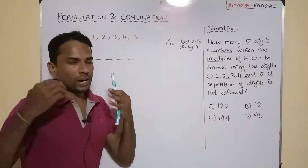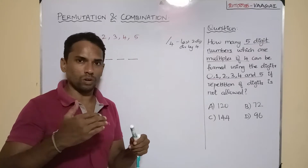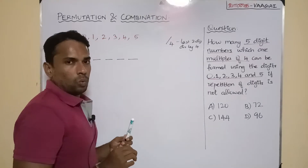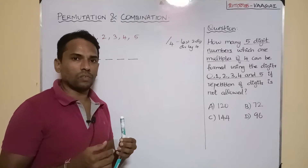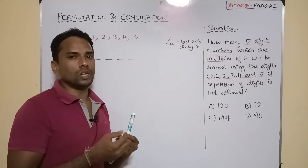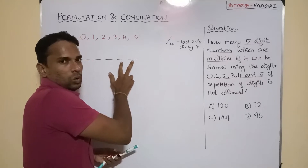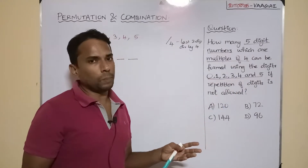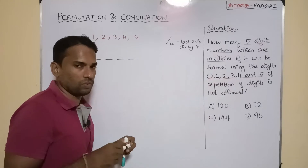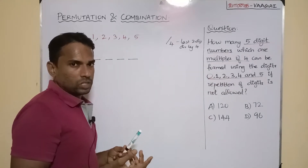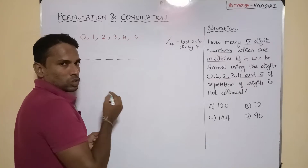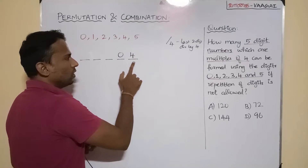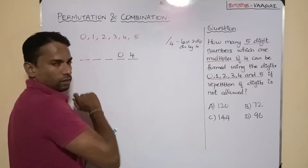With our given collection of digits, let us find all possible combinations for the last 2 digits. We recall the 4 times table. Starting from 4×1=4: we can fill the last two places with 0 and 4, since both digits are available in our collection.